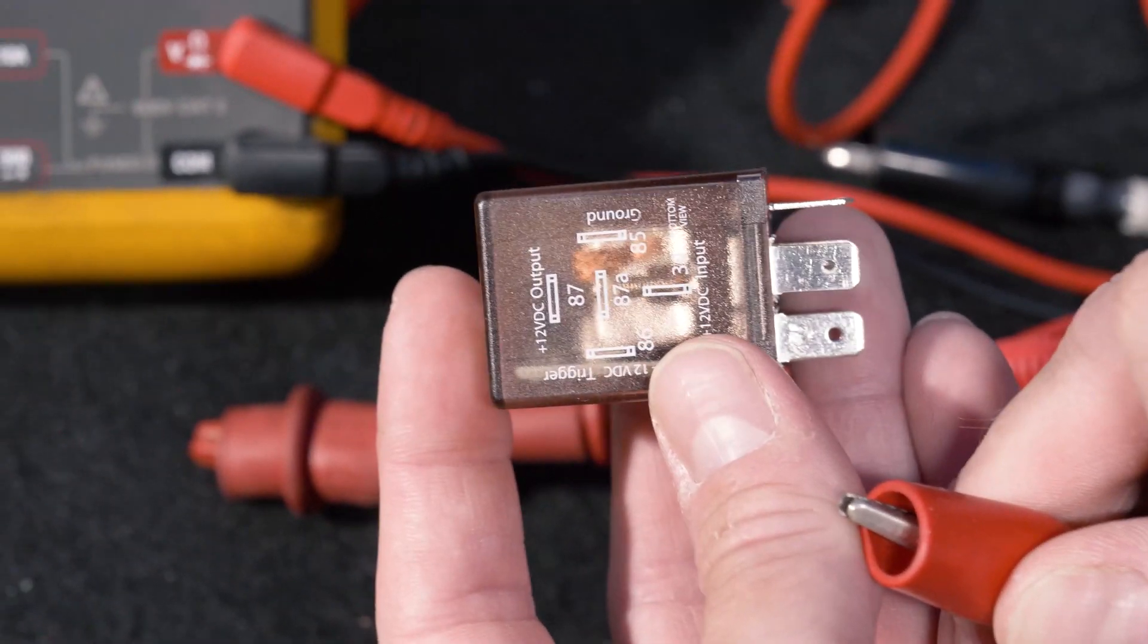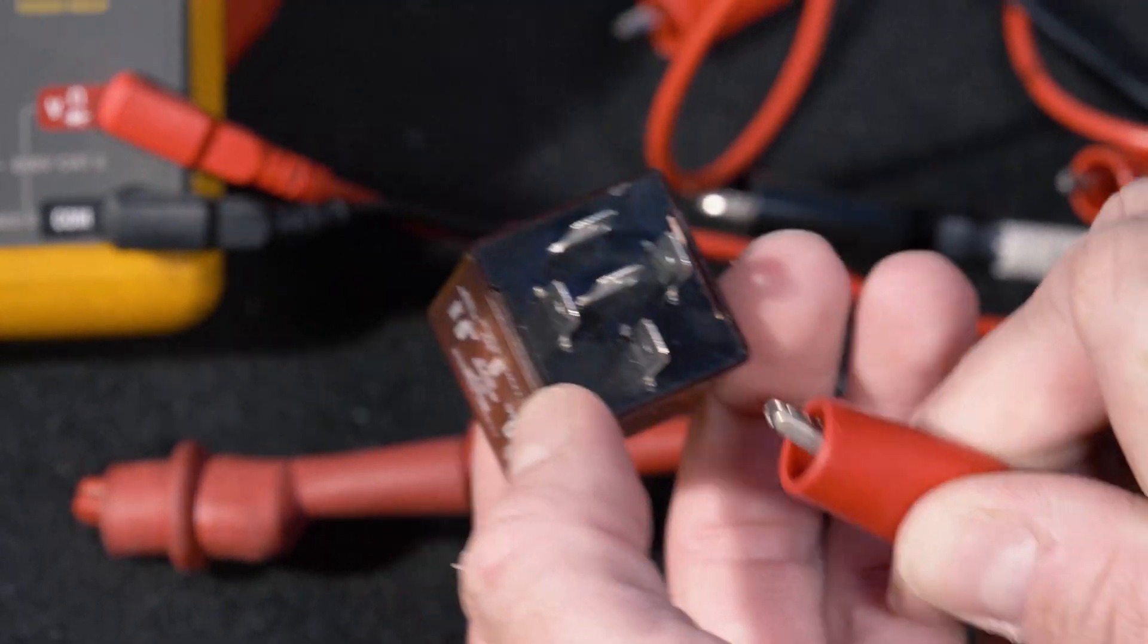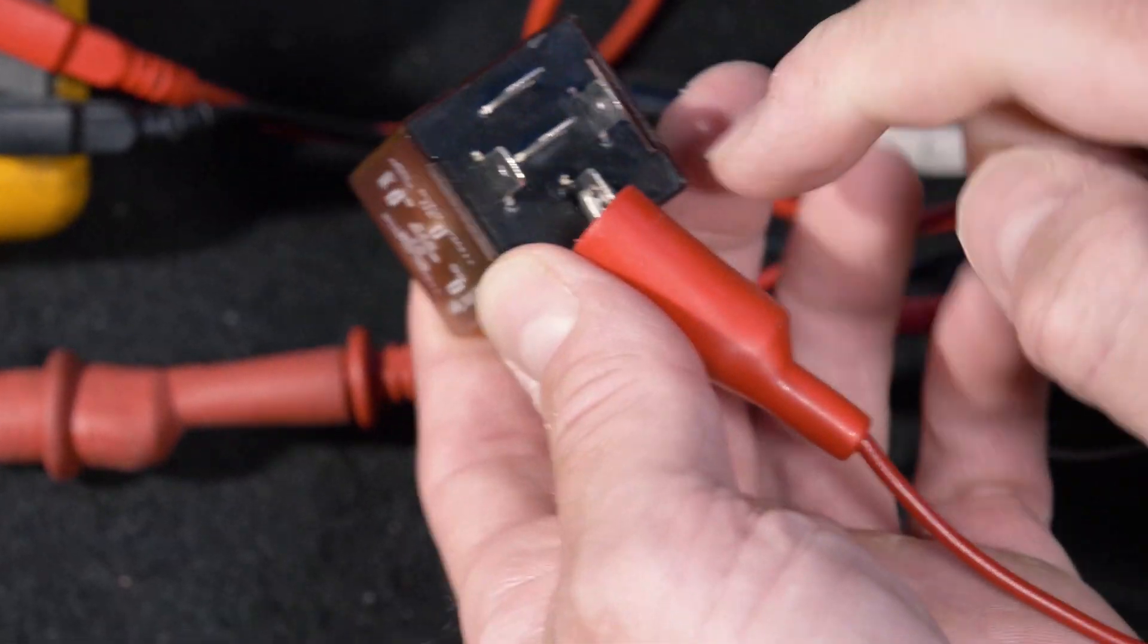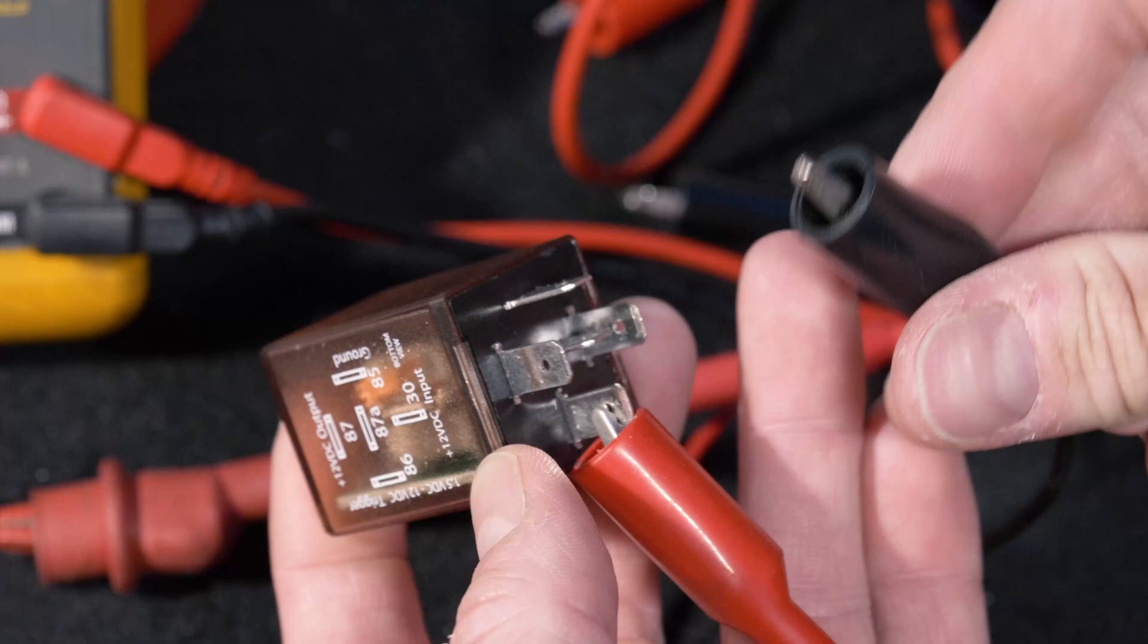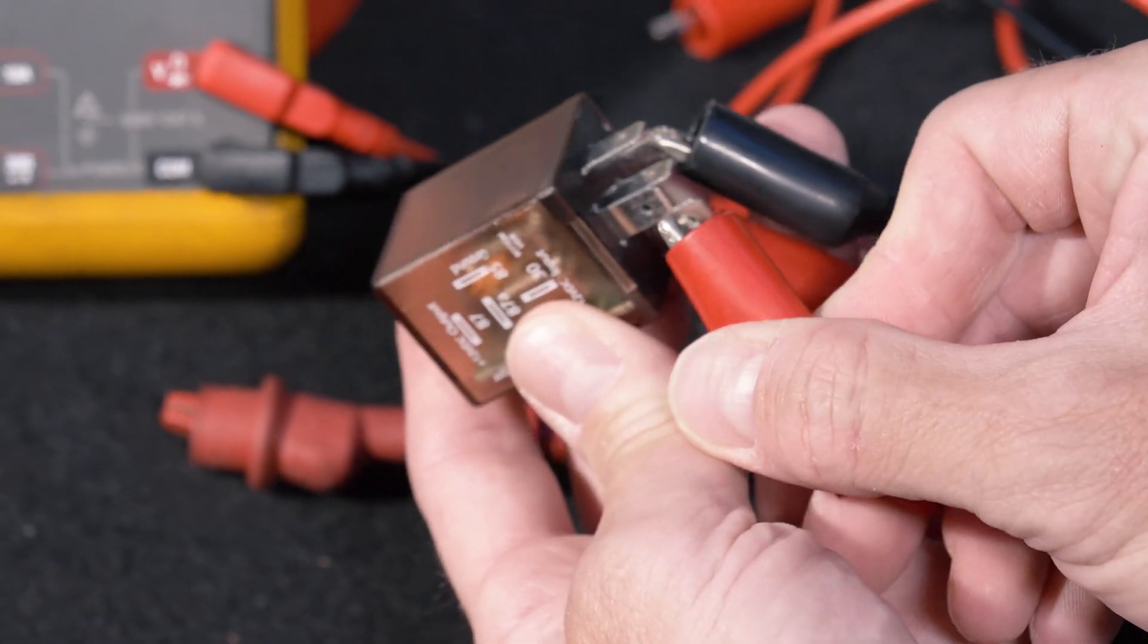Now be advised when hooking this up, remember the diagram is flipped 90 degrees. So in our case here, this is our constant 12 volts used to power the internal circuit. This is our constant ground, and then we have our trigger.